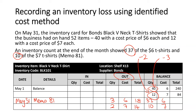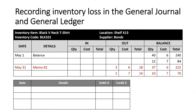I need to put my new balances in. 10 times $7 is $70, and 37 times $6 is $222. That's how I record my inventory loss in the inventory card. I now take that information into the general journal. On May 31st, I have an expense going up — I'll call that expense Inventory Loss — and the total amount is $18 plus $14, which is $32. The second account affected is Inventory, which I need to reduce in the general ledger by $32.